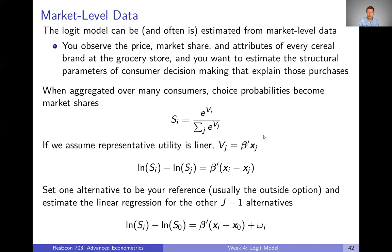If we use our usual assumption that representative utility is linear, then we can plug in beta times X. And if we just take the ratio and log, ultimately we can get to this expression where the log of one market share minus the log of another market share equals this linear expression that depends on our parameters and the data about each product.